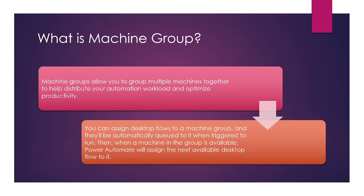When a machine in the group is available, Power Automate will assign the next available desktop flow to it. For example, in a production environment with three desktop flows and two machines — if you create a machine group and include those two machines, whenever you trigger a desktop flow it will be queued and assigned to whichever machine is available, increasing productivity and reducing workload.